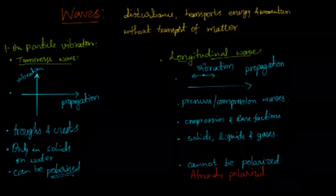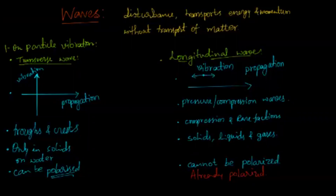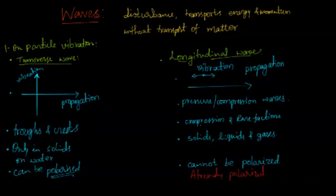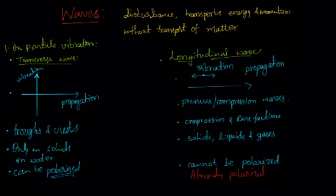How are longitudinal waves characterized? There are compressions and rarefactions. Compression means high-density regions, and rarefactions are low-density regions. This actually happens at a micro level — we can't make out the compressions and rarefactions with the naked eye, but it is happening on a small scale.